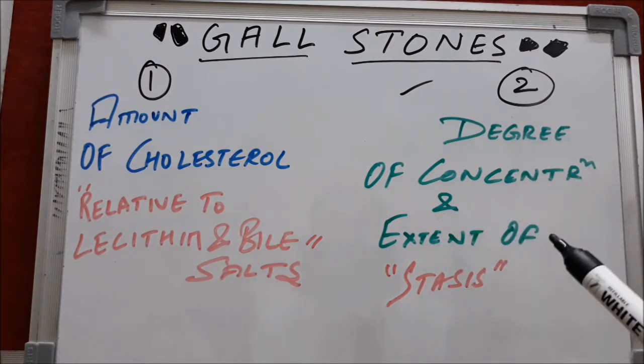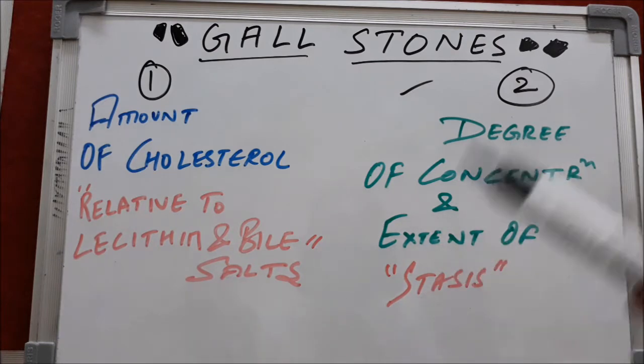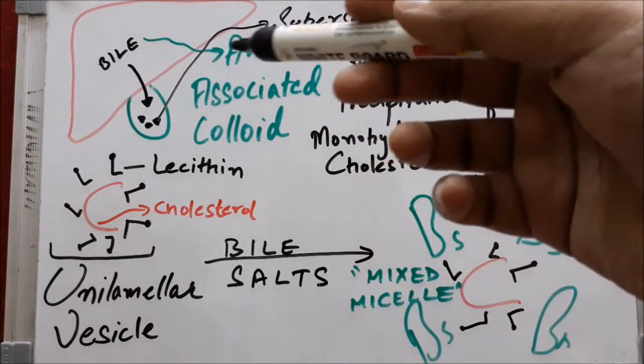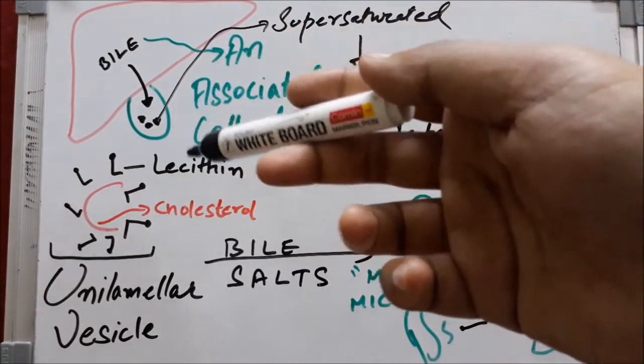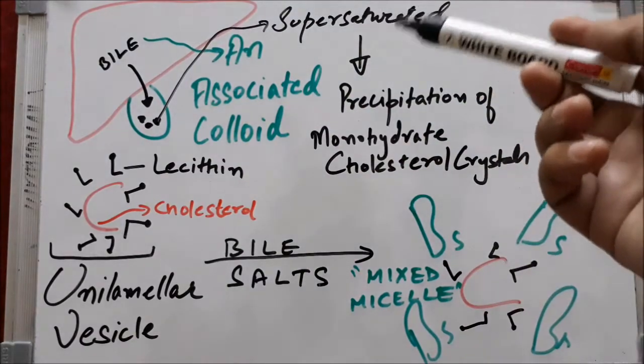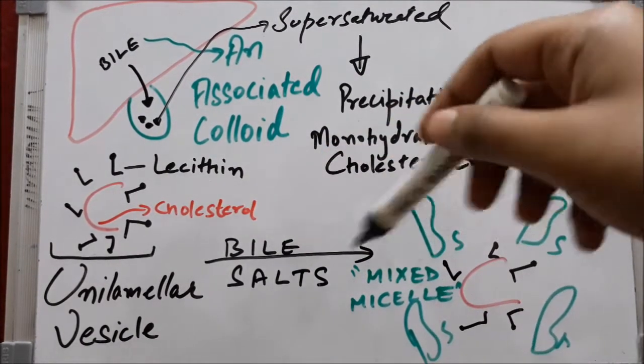Now let us understand how gallstones form. Bile is an associated colloid. When transferred into the gallbladder, if the supersaturated state occurs, it leads to the precipitation of monohydrate cholesterol crystals.